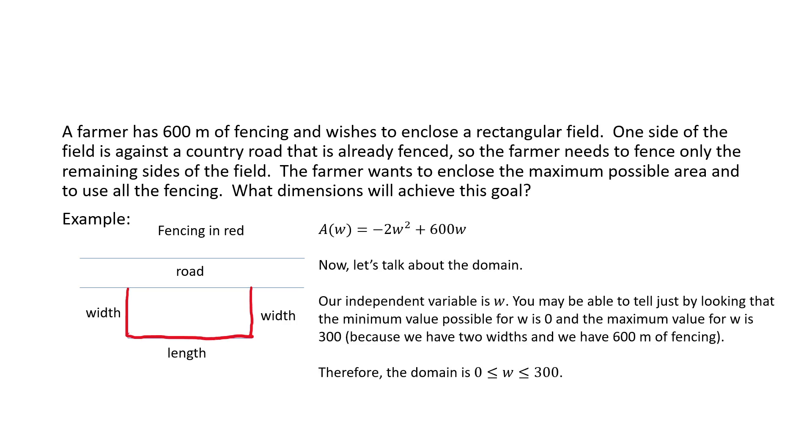We have our formula for area with only one independent variable. Let's discuss the domain. We see our independent variable is W. You can tell by looking that theoretically it would be possible to make a rectangle with an extremely small, virtually zero width and a very long length. It wouldn't make much sense for a farmer to do that, but we can see that theoretically our width could be virtually zero.